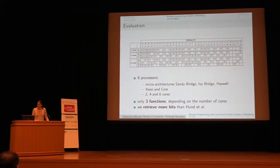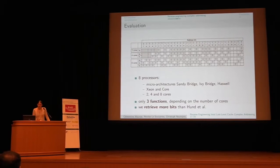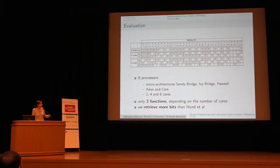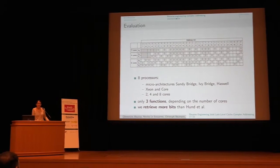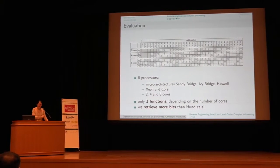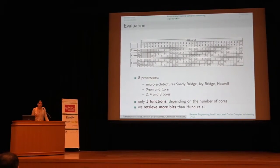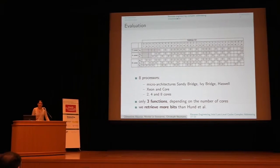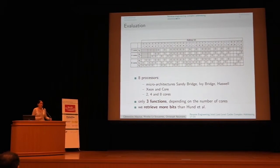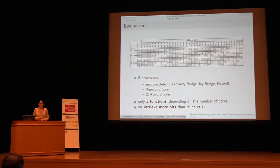We have two important insights. First, there are in fact only three distinct functions: O0 for two cores equals O0 for four and eight cores; O1 for four cores equals O1 for eight cores — giving us just O0, O1, and O2. Second, compared to the prior work of Humbel-Fal, our method is more direct: it maps one physical address directly to one slice, which wasn't possible before, and it allows retrieval of more bits — specifically bits 6 to 16, which could not be retrieved with prior methods.